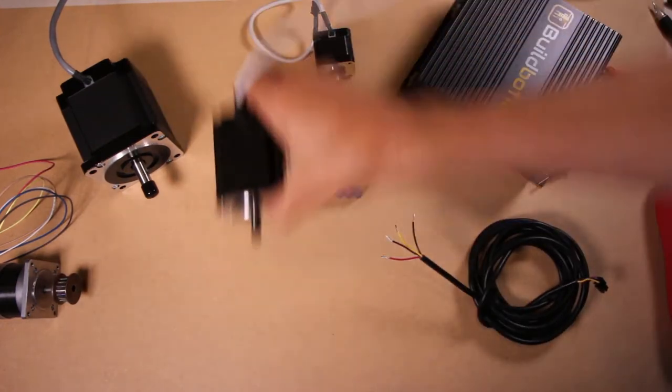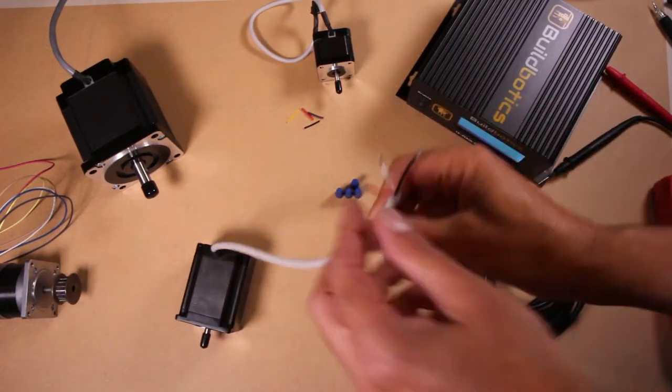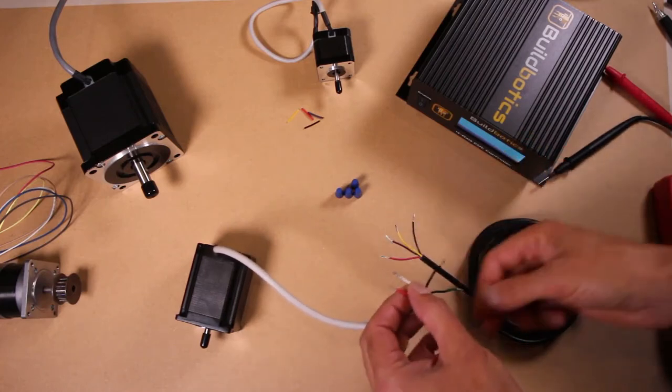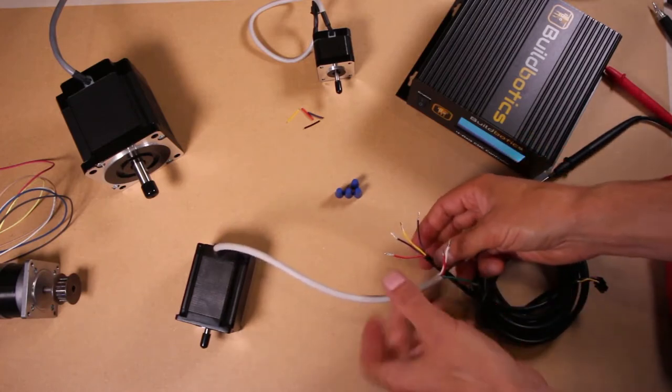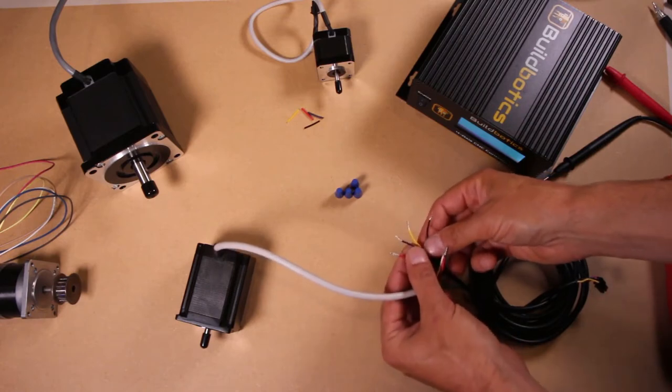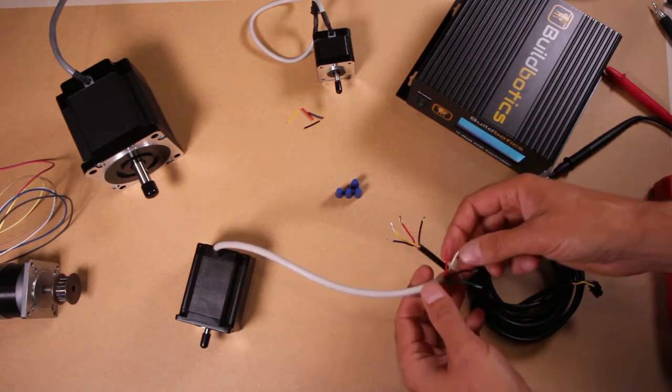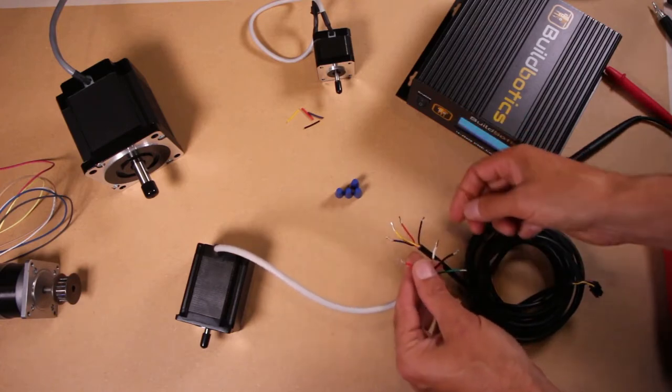Now we know from earlier with this motor that one of the phases is on red and white and the other is on green and black. We know that the cable has one phase on yellow and purple and another phase on red and black. We will simply connect these together.